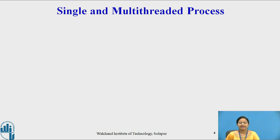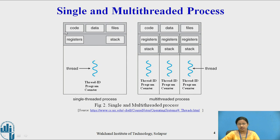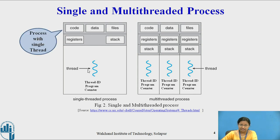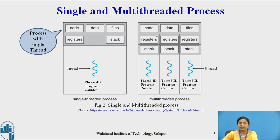Now let us see the single and multi-threaded process. As shown in this figure, the left part shows a single-threaded process. That thread contains its own thread ID and program counter along with its register set and stack, while the code, data, and file section is also associated with that thread. In the multi-threaded case, the process has three different threads. Each thread contains its own ID and program counter along with their own register set and stack, while the code, data, and file section of those threads are shared with each other because they belong to a single process.